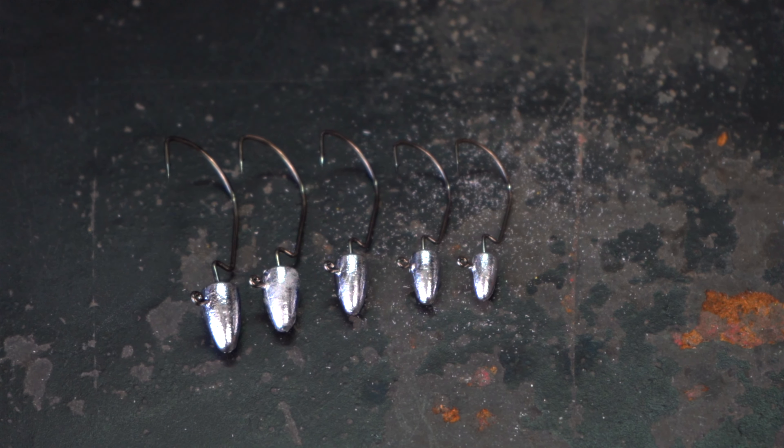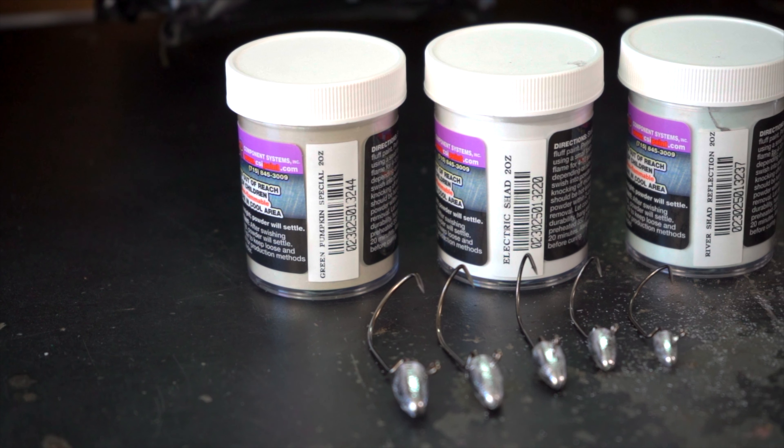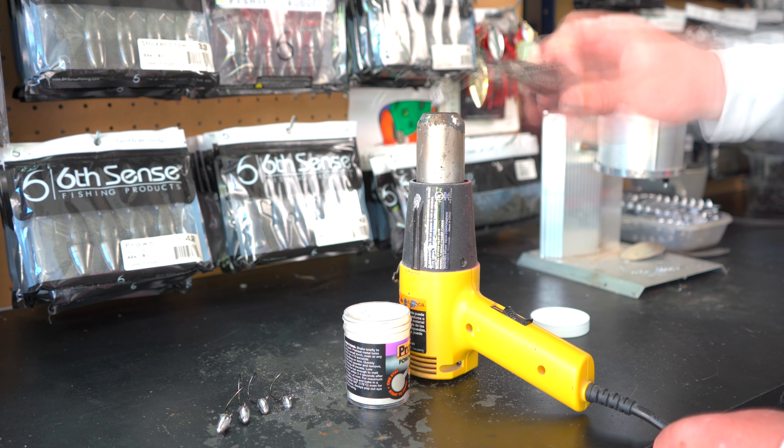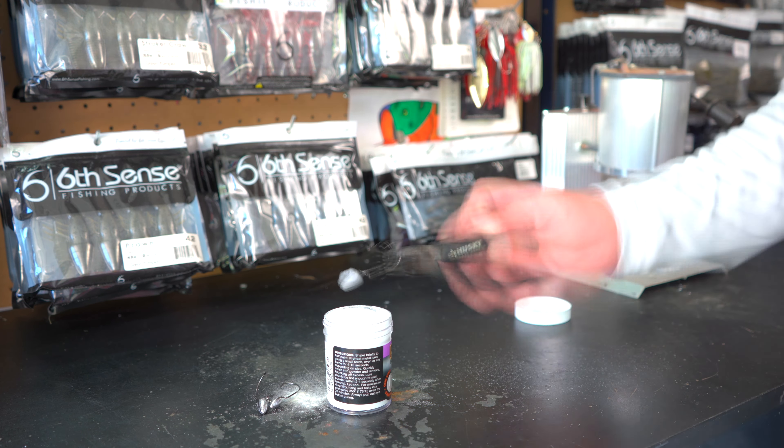The same time this mold came out, Protek came out with three brand new powder paints as well that we're going to feature in this video. First one is Green Pumpkin Special, Electric Shad, and then River Shad Reflection.